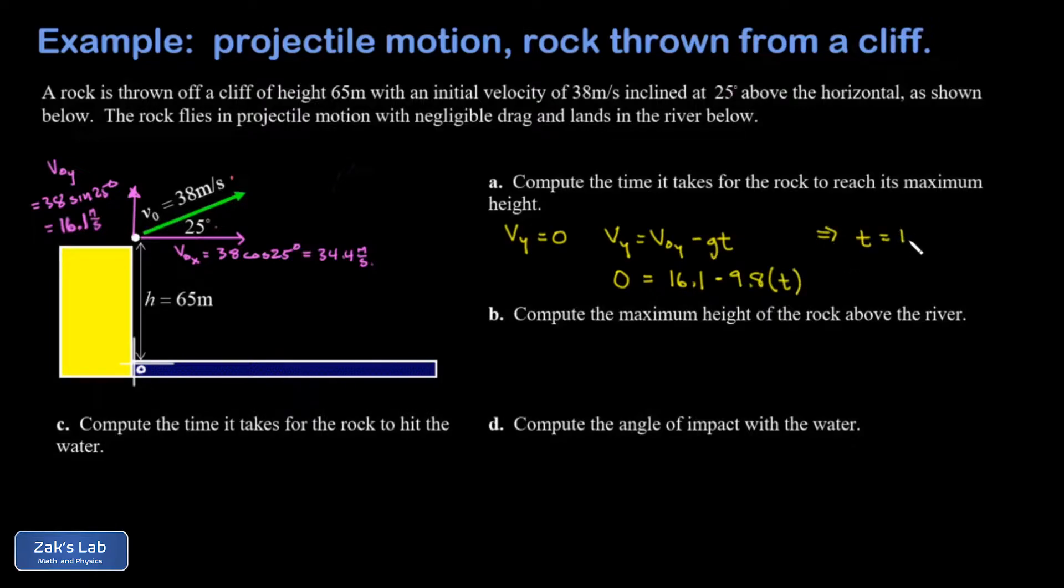In part B we're asked for the maximum height of the rock above the river. Well now we know what time it is when the rock reaches its maximum height, so we just plug into the y position function: y = y₀ + v₀ᵧt - ½gt².